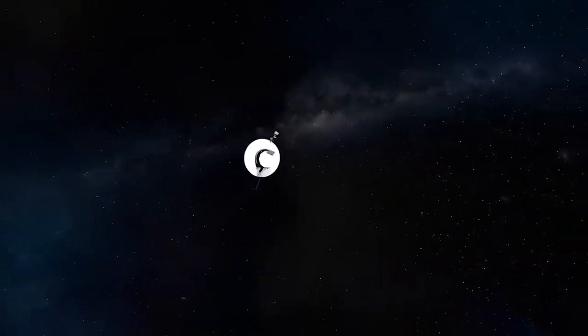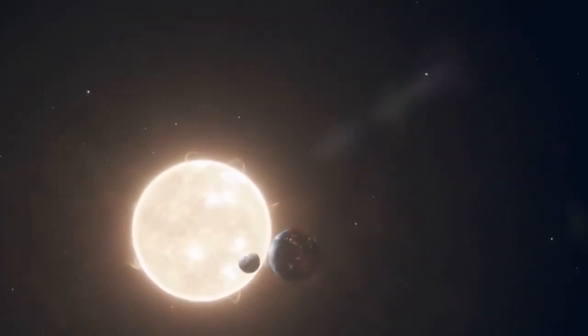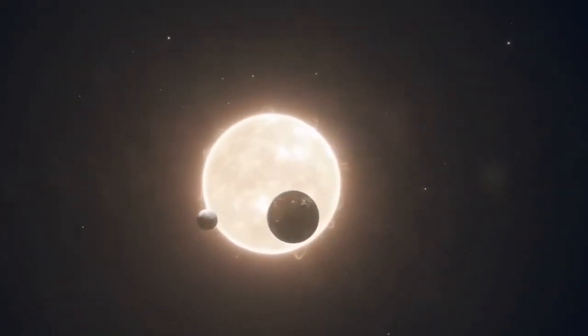Currently, Voyager 1 is on the opposite side of the sun from us, way out in interstellar space. Imagine it like this: even though it's far away, it still takes a long time for us to communicate with it.